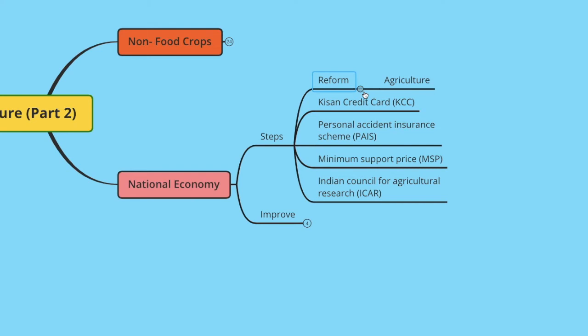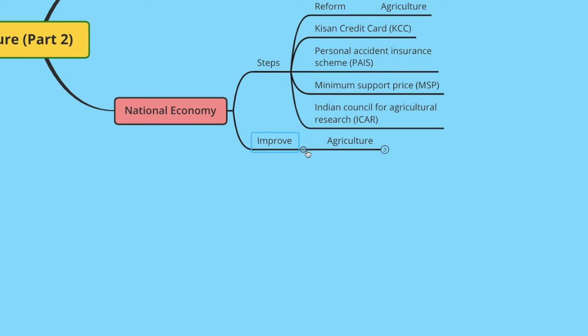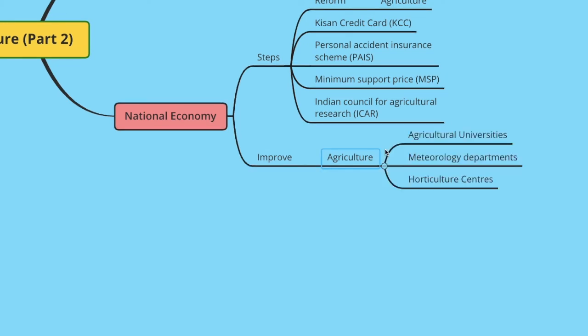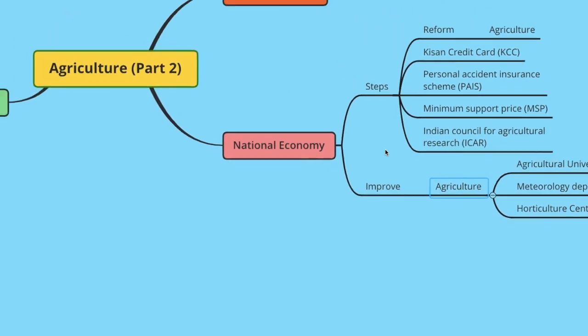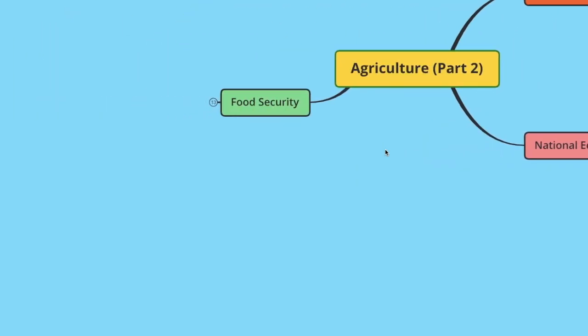There are other steps taken to improve agriculture — agricultural universities are set up, meteorological departments and horticulture centers are also established. And finally, let's look at food security.